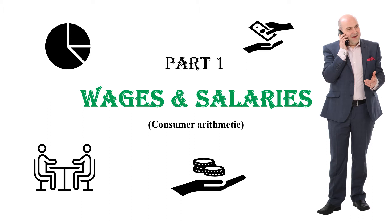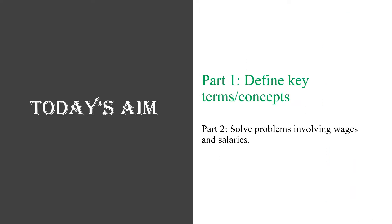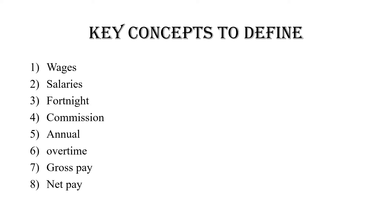The aim today is basically to define the key concepts or terms in relation to wages and salary. We're still under consumer arithmetics, but this concept brings about a lot of terms we need to be aware of. In part two, which will come out tomorrow God willing, we will solve different problems involving wages and salary. The key concepts we want to define today are: wages, salaries, fortnight, commission, annual, overtime, gross pay, and net pay.